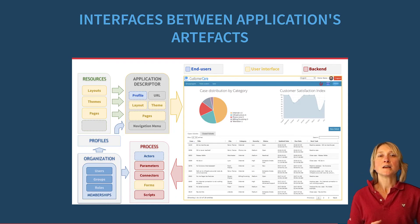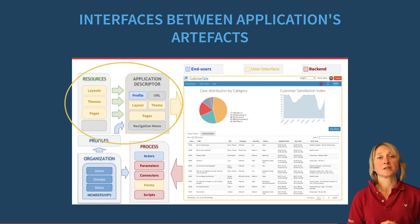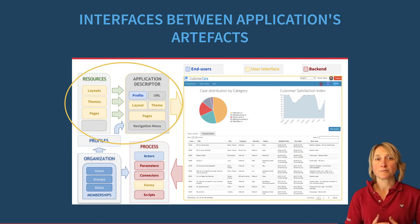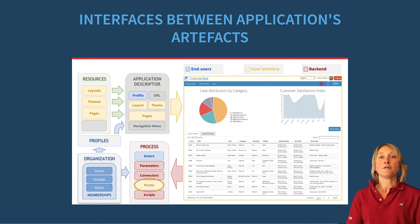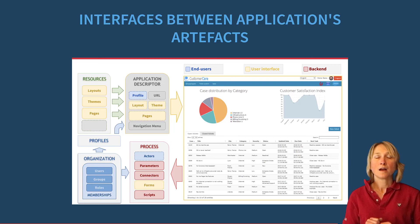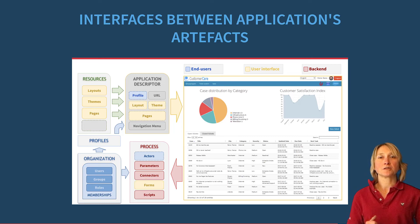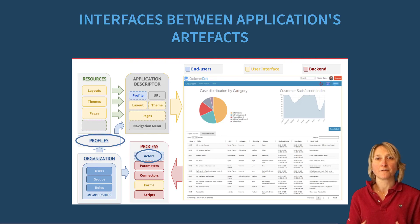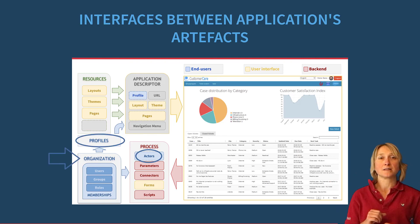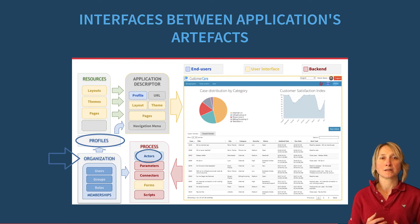The frontend is composed of resources and properties such as layouts, themes, pages and the application descriptor. Only the forms are part of the frontend but are directly linked to the processes. Finally, the combination of actors for processes and profiles for the user interface, linked to the organization, defines the way users interact with the processes in this application.